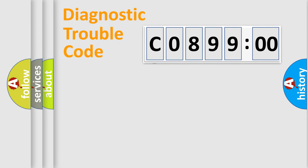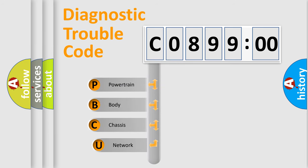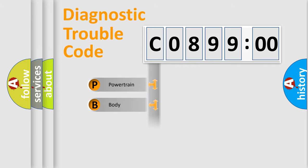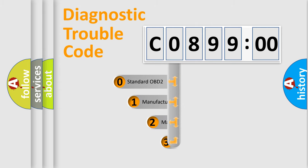First, let's look at the history of diagnostic fault code composition according to the OBD2 protocol, which is unified for all automakers since 2000. We divide the electric system of an automobile into four basic units: powertrain, body, chassis, and network. This distribution is defined in the first character of the code.